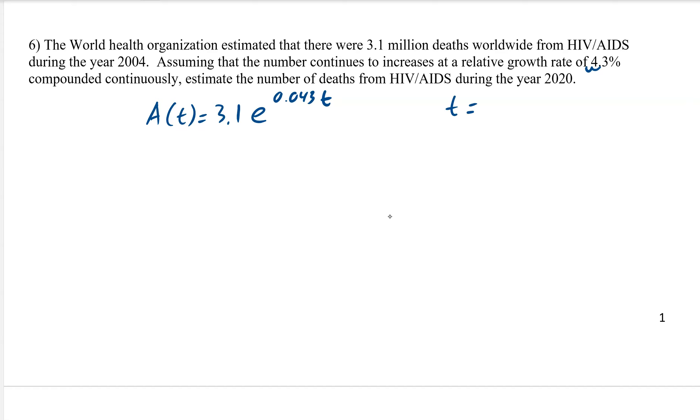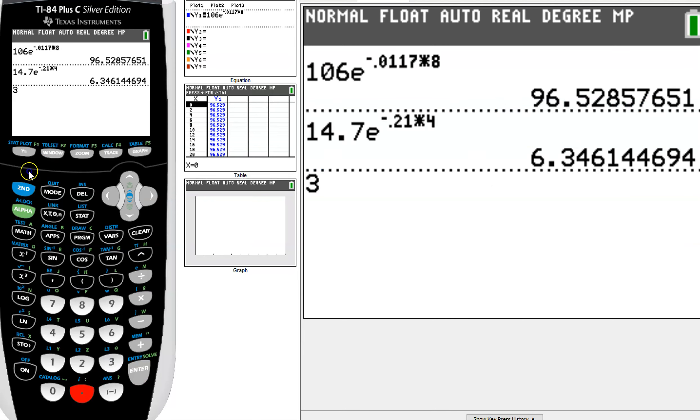So again, you want to write out what it is. t is years since 2004. And then A equals number of deaths. And so, now all we have to do is plug in what 2020 is. So if 2020, we minus 2004, and that gives us 16. So that's our t. So 3.1e to the 0.043 times 16. Plug that in the calculator. So 3.1 second ln, and then 0.043 times 16. Hit enter, and we get 6.2.